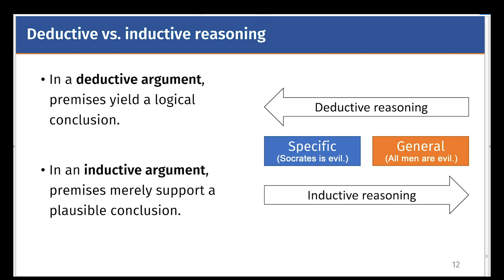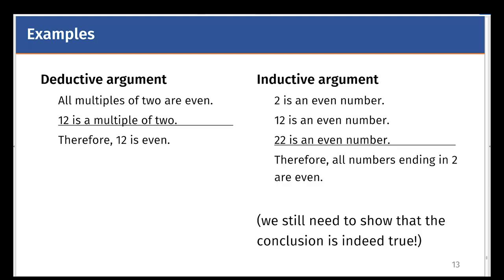Here's a mathematical example comparing deductive argument and inductive argument regarding even numbers. In a deductive argument, you would start by saying that all multiples of two are even. Twelve is a multiple of two, therefore twelve is even.